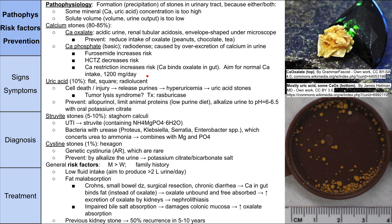Next are uric acid stones — about 10% of all stones. These are flat, square, and radiolucent. They can result from cell death or cell injury. When a cell dies and breaks open, it releases purines, which are converted to uric acid, causing hyperuricemia. That can precipitate uric acid stones. This is what happens in tumor lysis syndrome — chemotherapy destroys a tumor or blood cancer, and all this uric acid ends up in the blood and can precipitate stones.